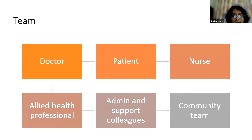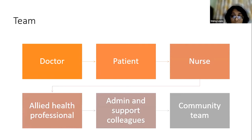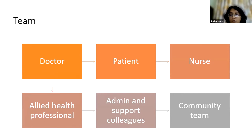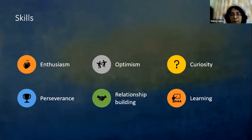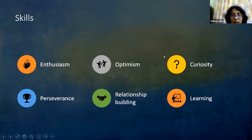As a quality improvement team, you have to include all people involved in the delivery of care. The doctor is not the only person — patient members, nurses, allied health professionals, and admin support are all extremely important. It is important to have buy-in from admin and management because many implementing changes require their influence. Skills gained during a QI process include enthusiasm, optimism, curiosity, perseverance, and building relationships.